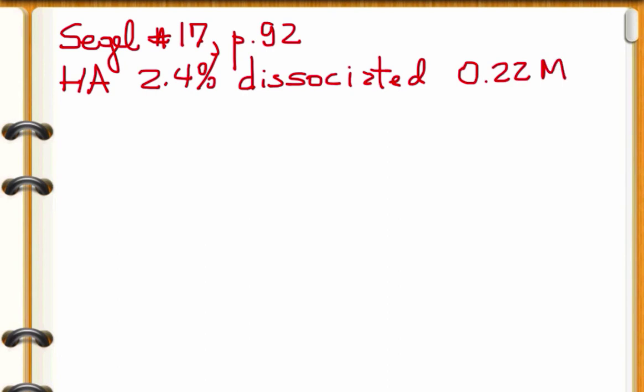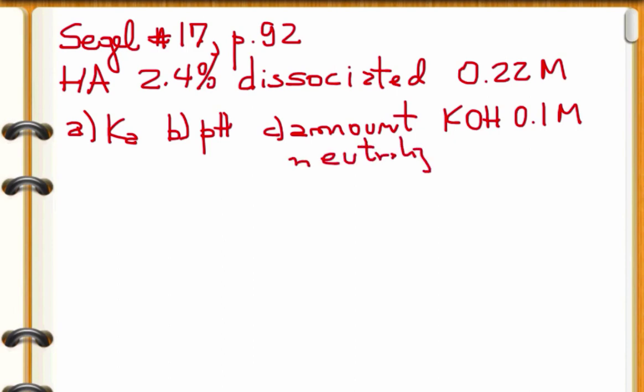They ask to calculate: A, the Ka association constant; B, the pH of the solution; C, the amount of 0.1 normal KOH required to neutralize 550 milliliters of the weak acid HA; and D, the number of H plus ions in 550 milliliters of the weak acid solution.